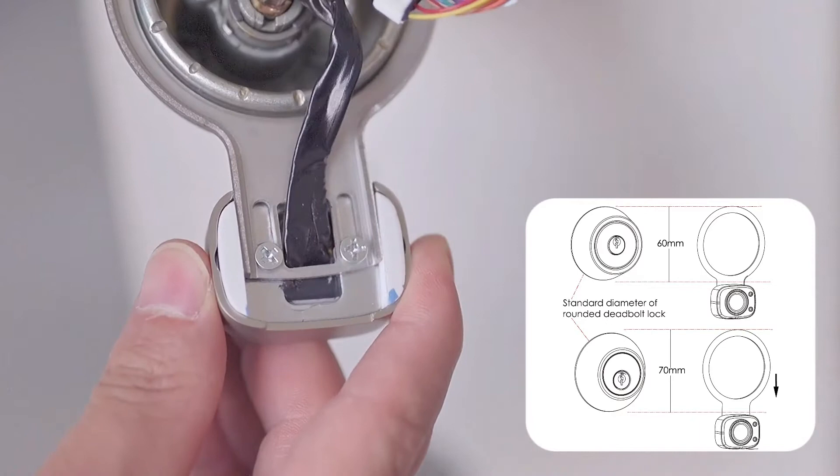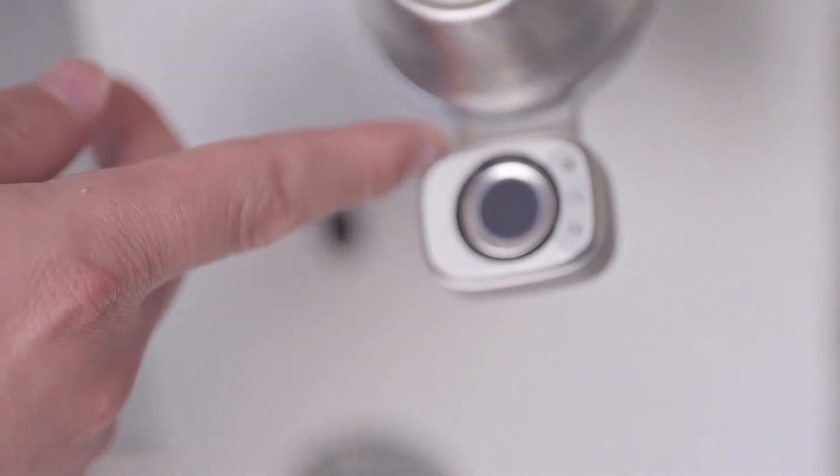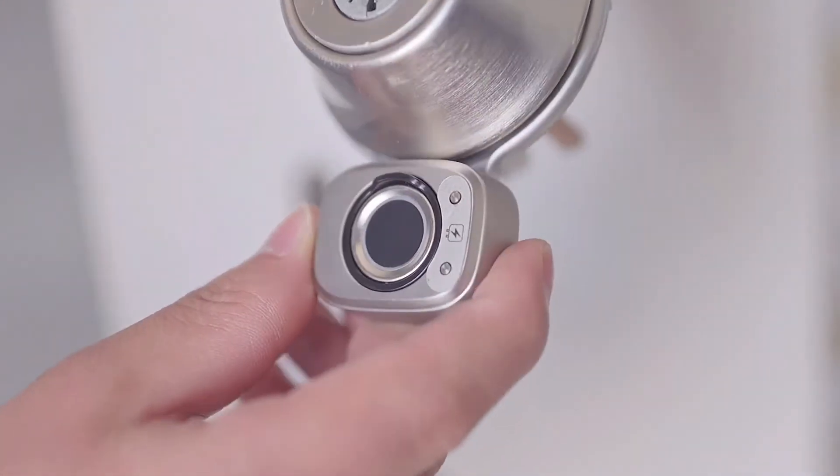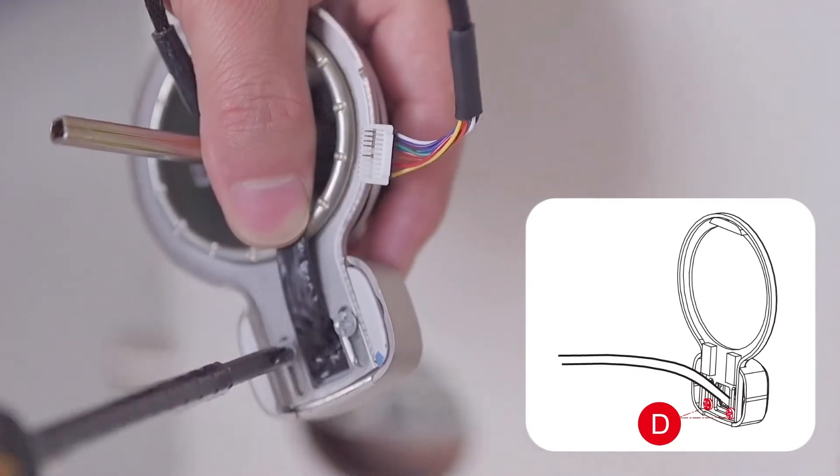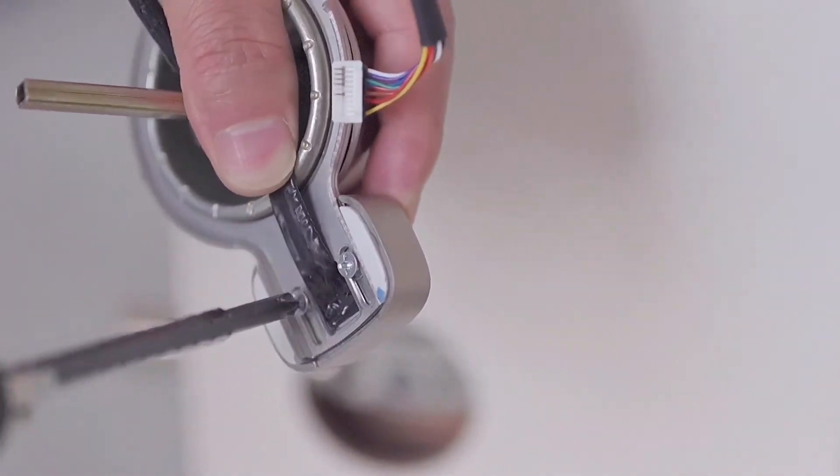Adjust the position of the sensor according to the diameter of your deadbolt lock. Carefully tighten screws D after adjusting the position.